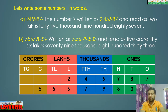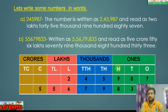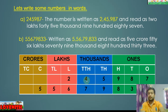Now we will discuss the place values of digits. Consider the number two lakh forty-five thousand nine hundred eighty-seven. Seven is on the ones place, so its value is seven. Eight is on the tens place, so its value is eighty. Nine is on the hundreds place, so its value is nine hundred. Five is on the thousands place — value five thousand. Four is on the ten thousands place — value forty thousand. Two is on the lakh place — value two lakh.